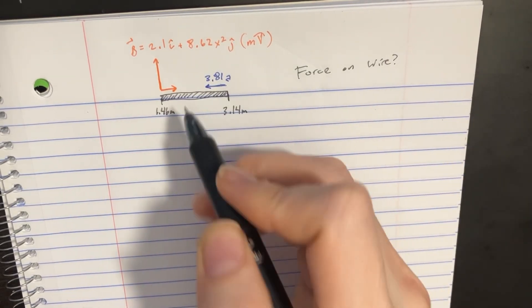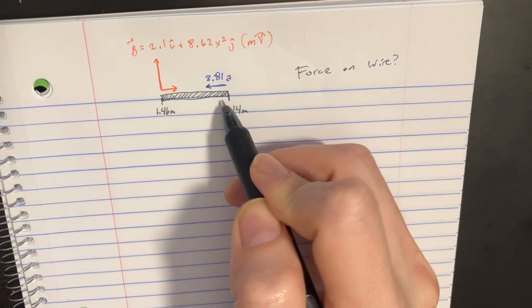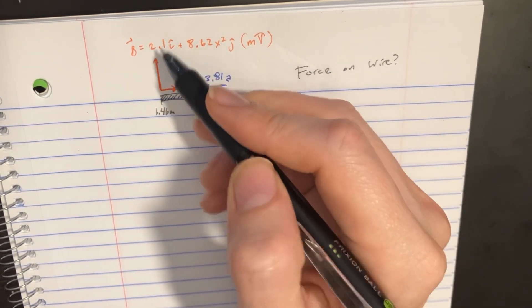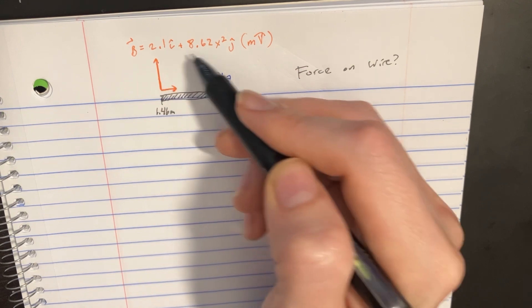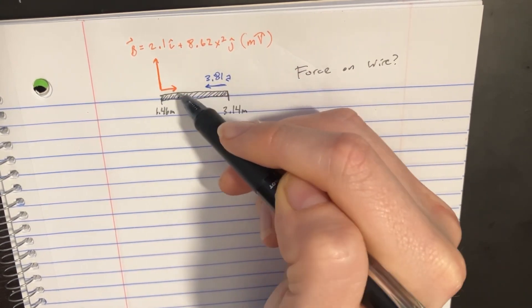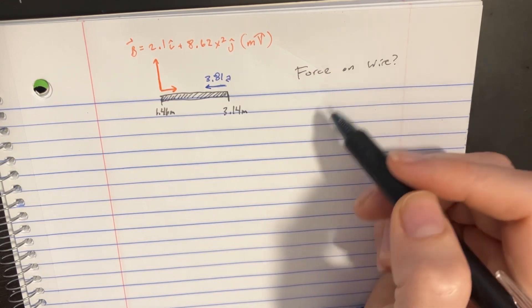Here we're trying to find the force on this wire in the x direction. We know that the current is going in a negative x direction, and there are two components of the magnetic field: one in the y and one in the x. We're just going to try to find the force.